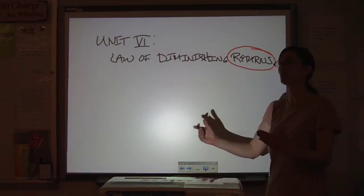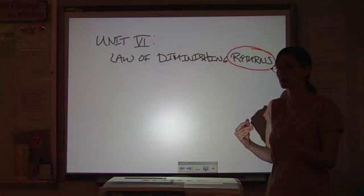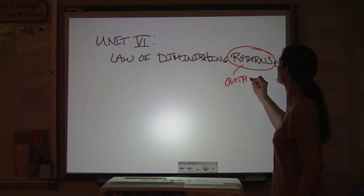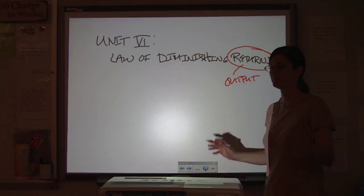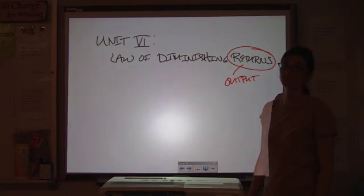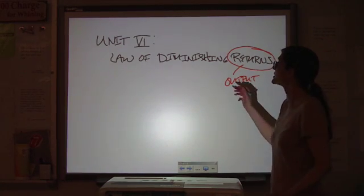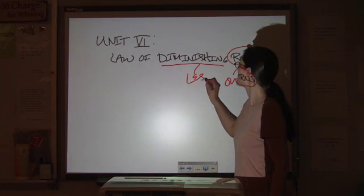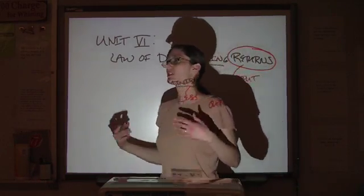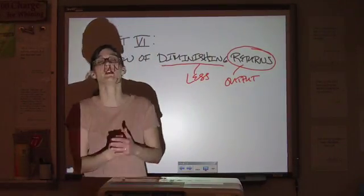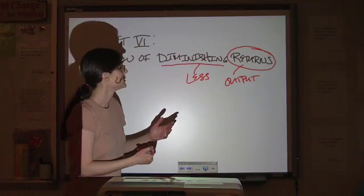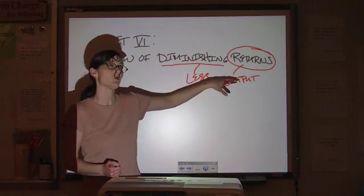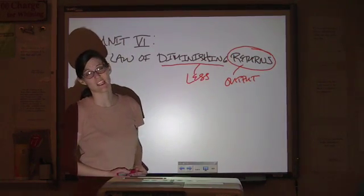If we have diminishing returns, your returns are what you get back out of your inputs. You put your inputs in, your outputs would be like your returns. And if it's diminishing, then that means it's becoming less. So what that means is that as you keep continuously increasing one input, then you're going to have less of an increase in your output until it's going to level off and finally go negative, which is not good.